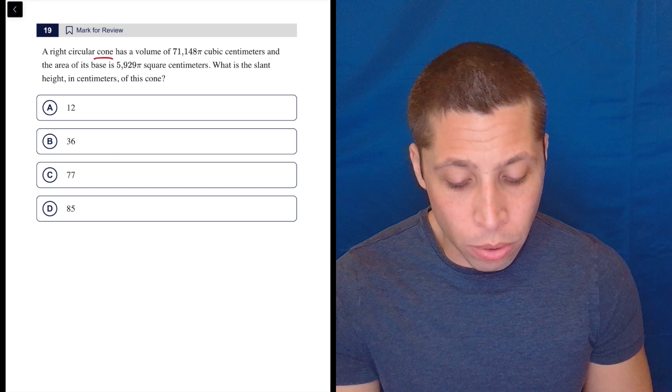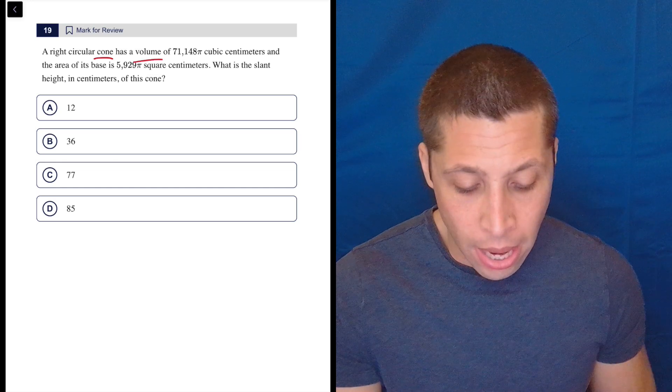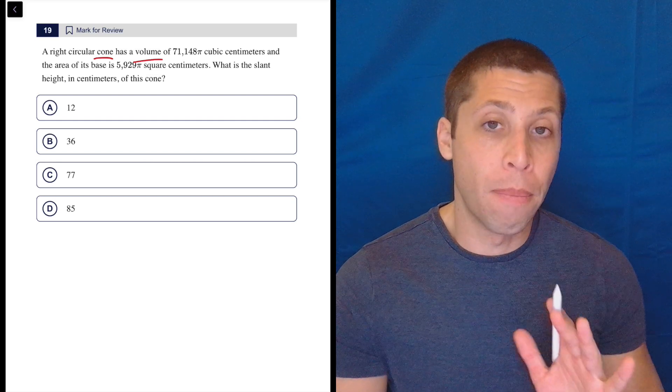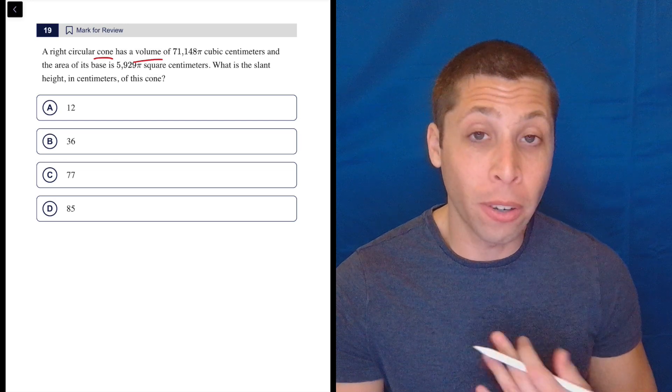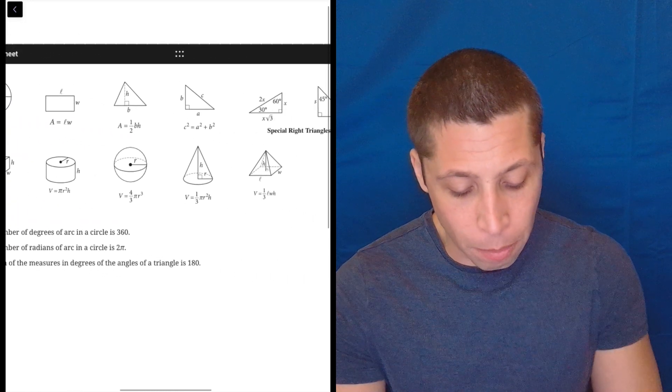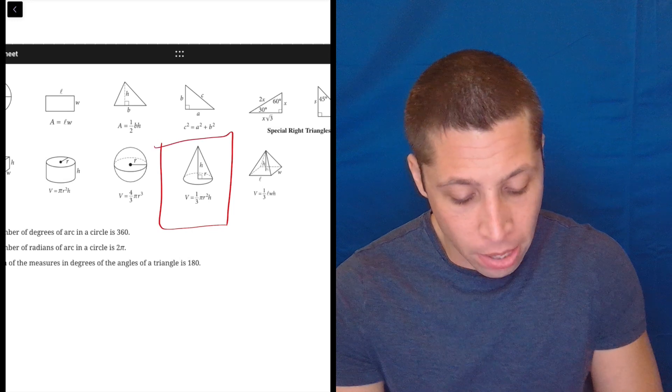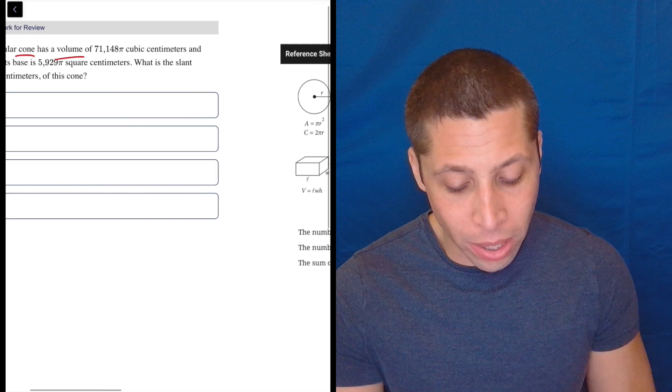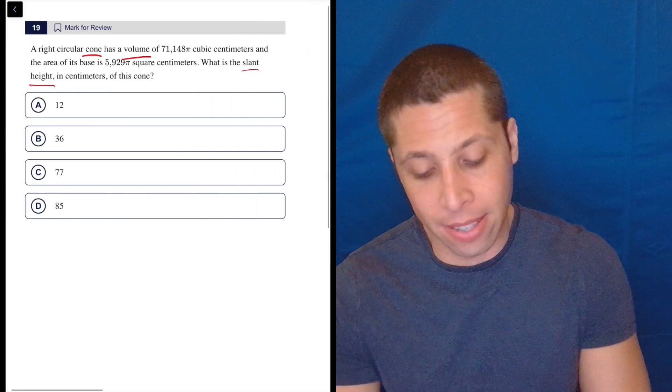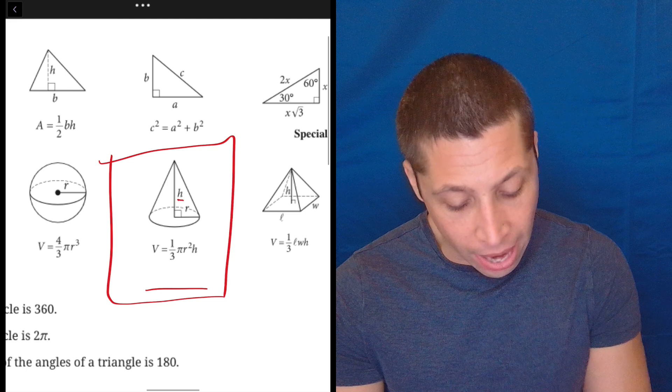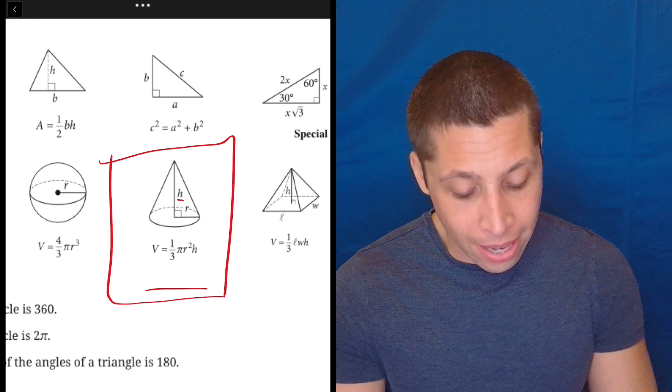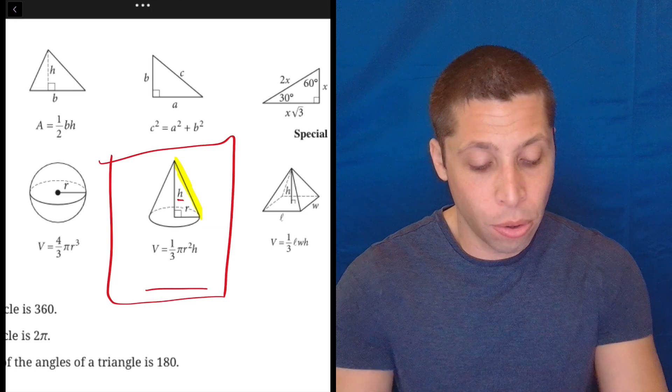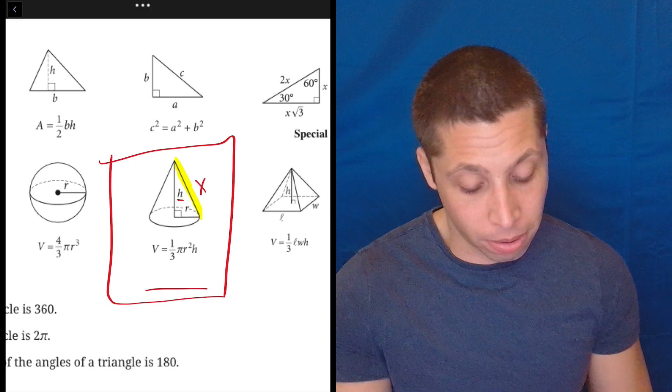So they do talk about a cone, a right circular cone with a volume of this and the area of its base is this other thing. What is the slant height in centimeters of the cone? So what we mostly need for the cone here is the volume formula, but you don't have to memorize that. That's in the reference chart that they give you. When they say what is the slant height, that means something different than this height. This is just the normal height of the cone. The slant height is this right here, kind of like the angled version of it. So that's really what we're looking for here.